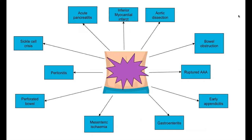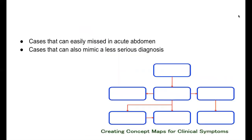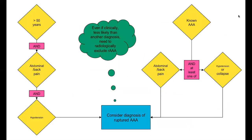The message I would like to come across is that the abdomen is a magic box and there are many cases that can easily be missed in acute abdomen, and cases that can also mimic a less serious diagnosis. For example, AAA — in patients where an alternative diagnosis is considered more likely, you need to exclude AAA with radiology prior to referral, particularly if your patient has these red flags: age more than 50, abdominal or back pain with hypertension or collapse.